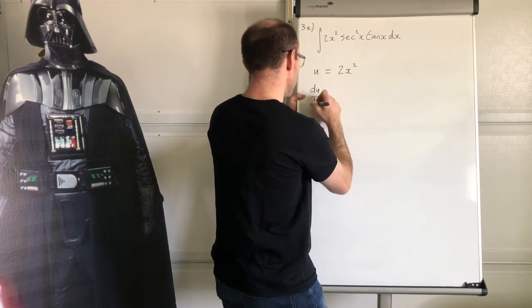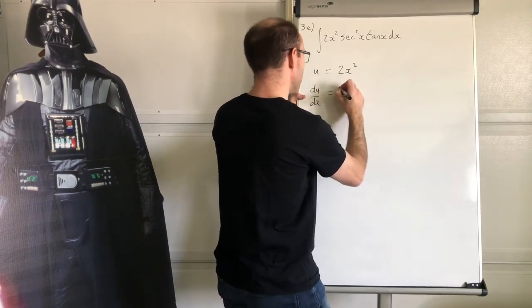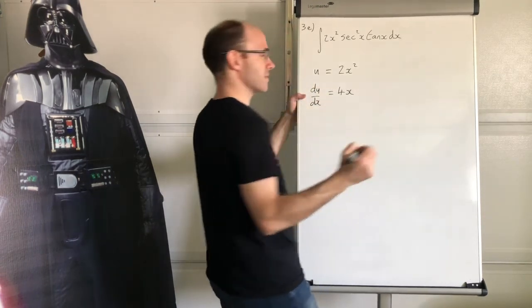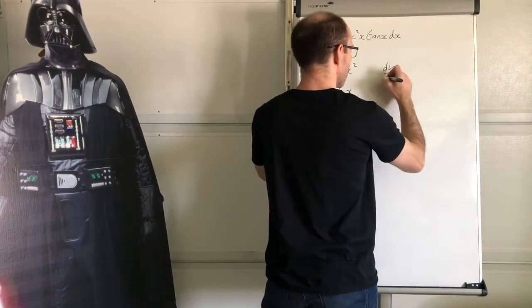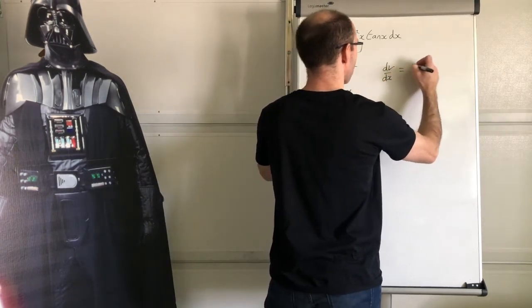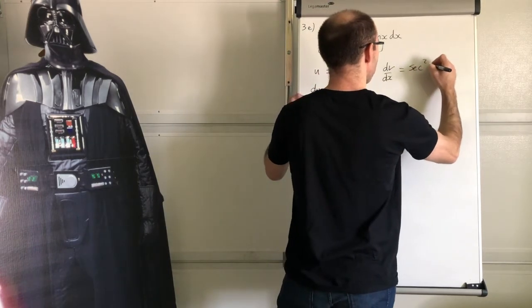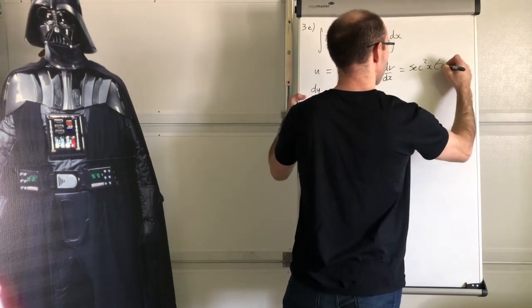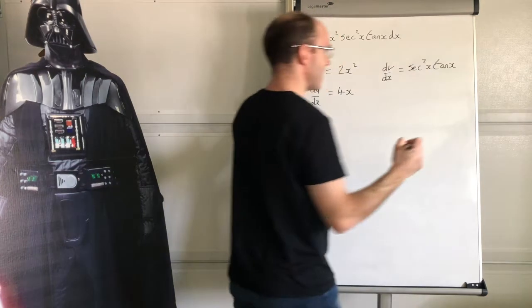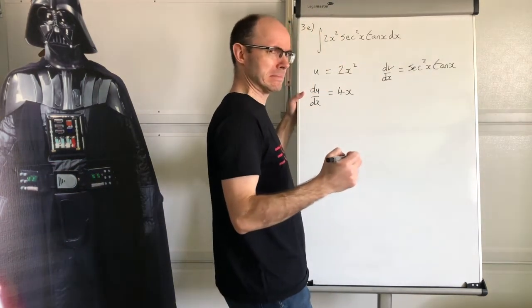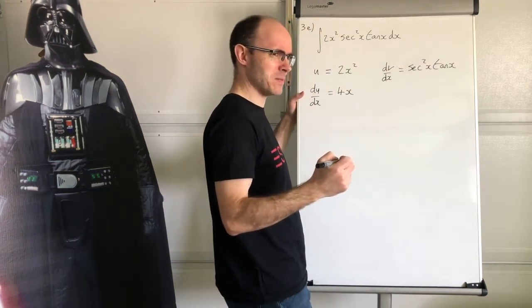This is going to be easy then, isn't it? 2x squared, that's 4x. So dv/dx is going to be the other one. 6 squared x, 10x. And at that stage, you're probably thinking, is the lesson finished yet? Can I go home now?